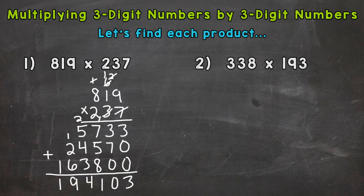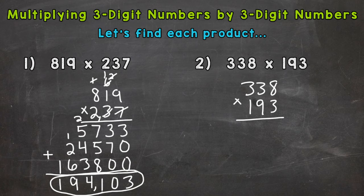On to number two. We line up our problem: 338 times 193. Let's go through our steps, going a little quicker. 3 times 8 is 24. 3 times 3 is 9 plus 2 is 11. 3 times 3 is 9 plus 1 is 10. We get 1014.